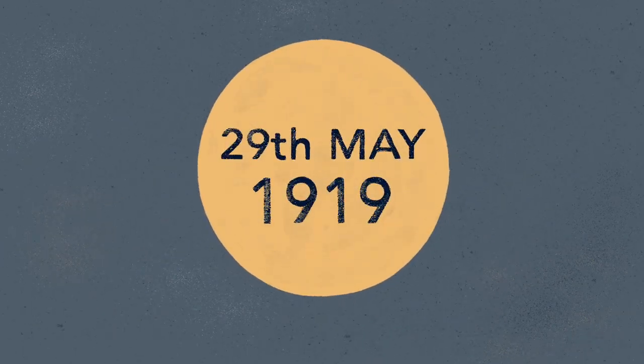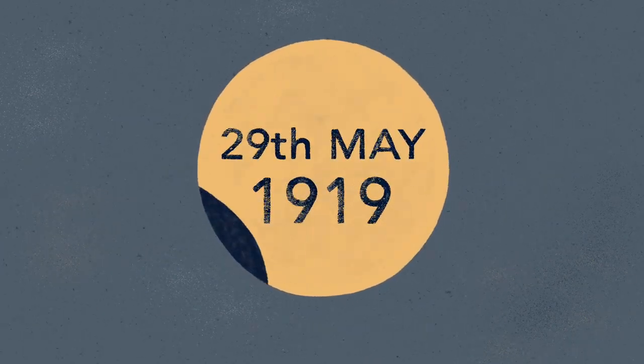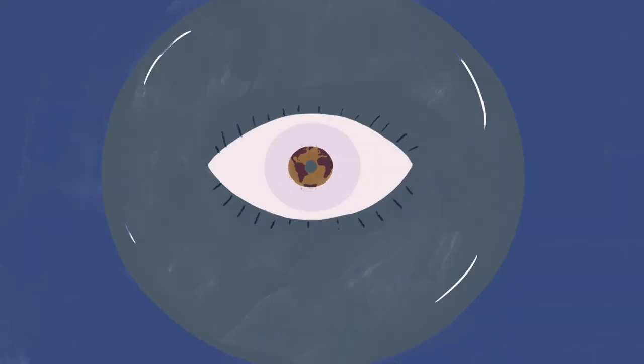On the 29th of May, 1919, the Moon eclipsed the Sun to allow a thin ray of light from the Hades star cluster to fall into Sir Arthur Eddington's telescopes.